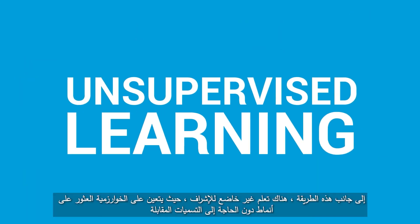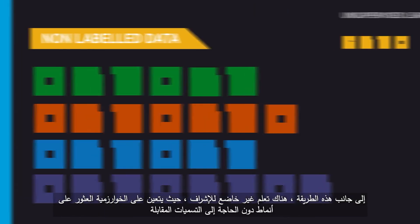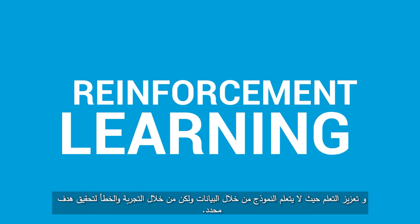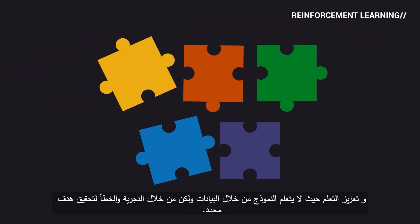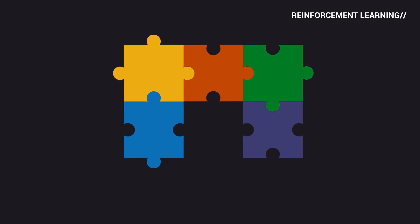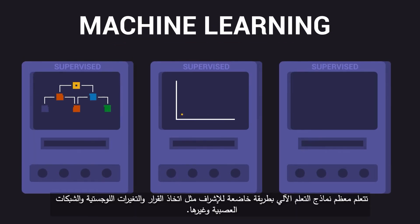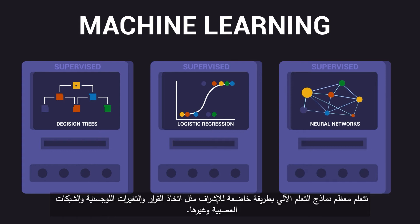Besides this method, there is unsupervised learning, where the algorithm has to find patterns without having the corresponding labels, and reinforcement learning, where the model does not learn through data but through trial and error to achieve a specific goal. Most machine learning models learn in a supervised manner, like decision trees, logistic regressions, and neural networks, among others.